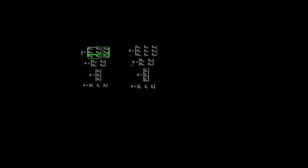Similarly, we can do the same for B. We can partition it as follows: this portion is B11, this one is B21, then this one is B12, and this one is B22.